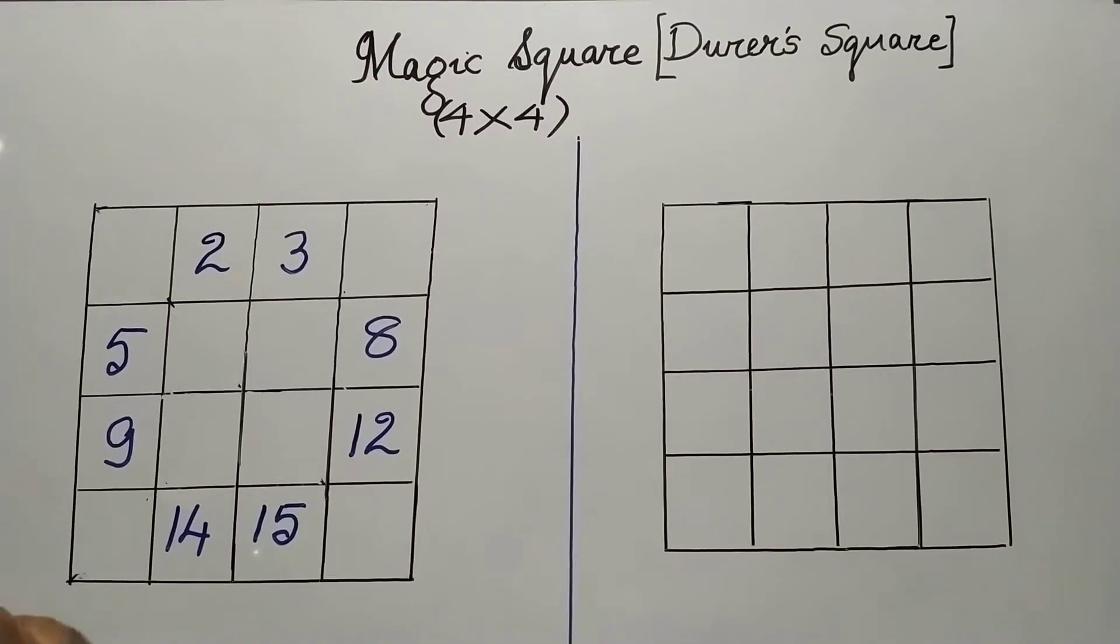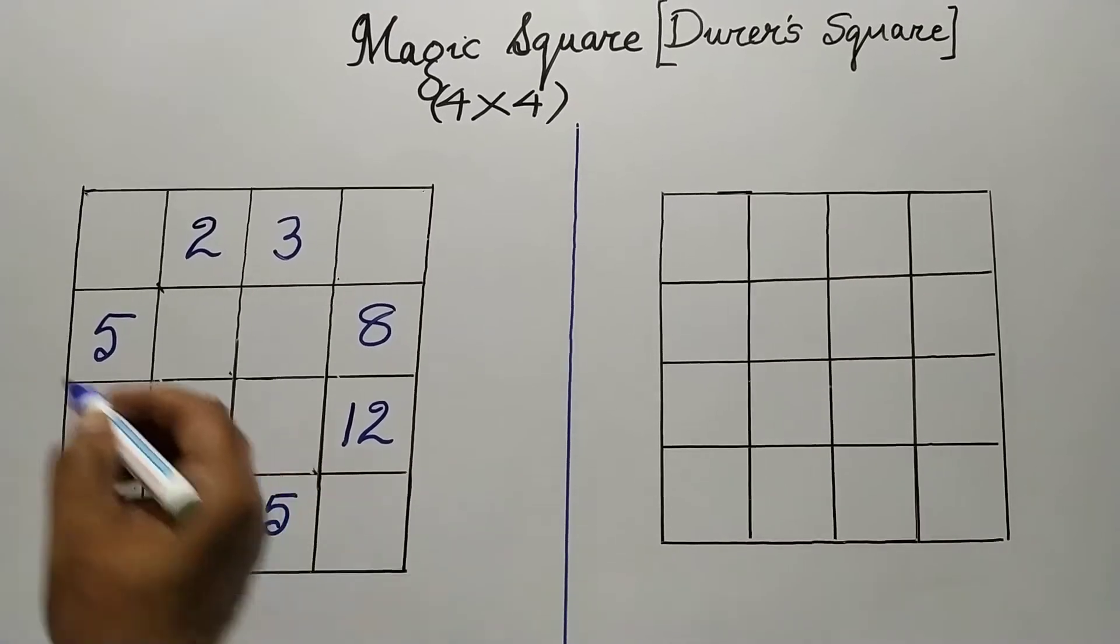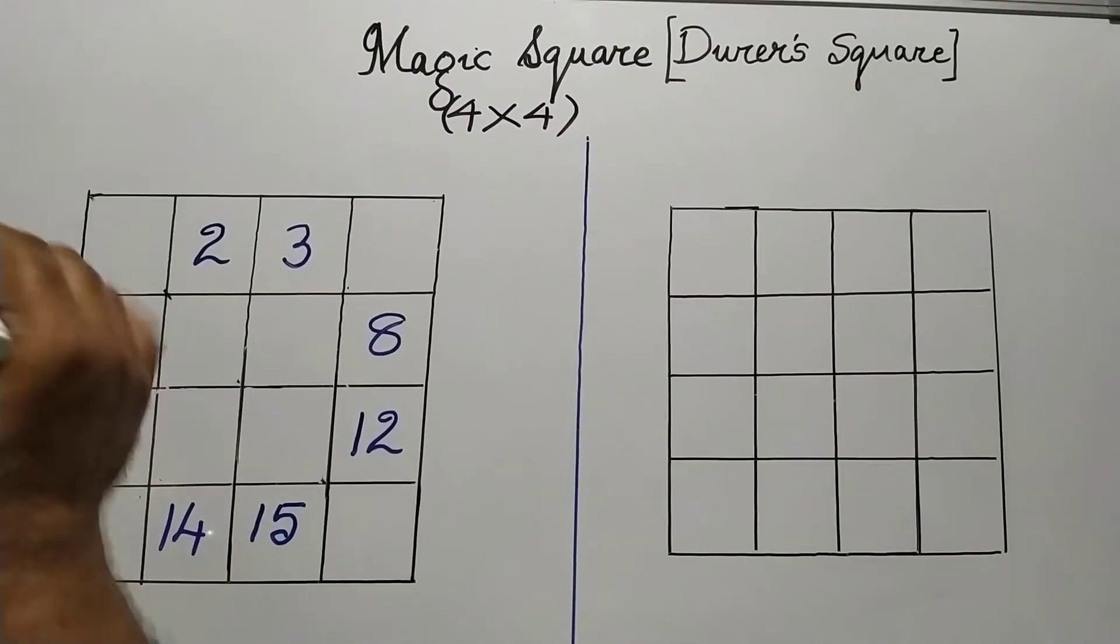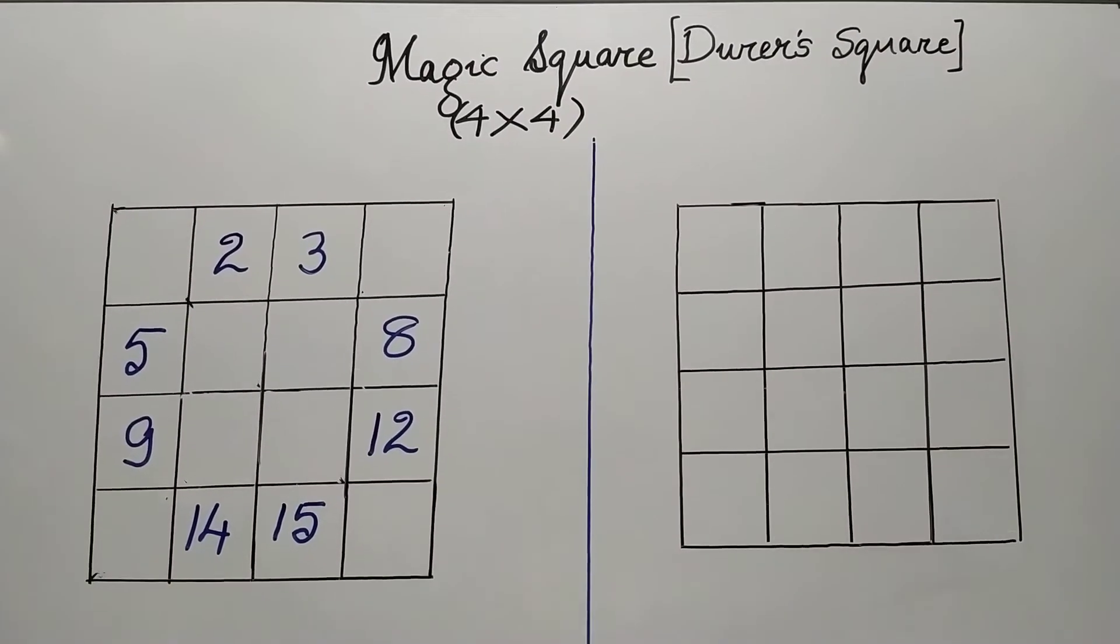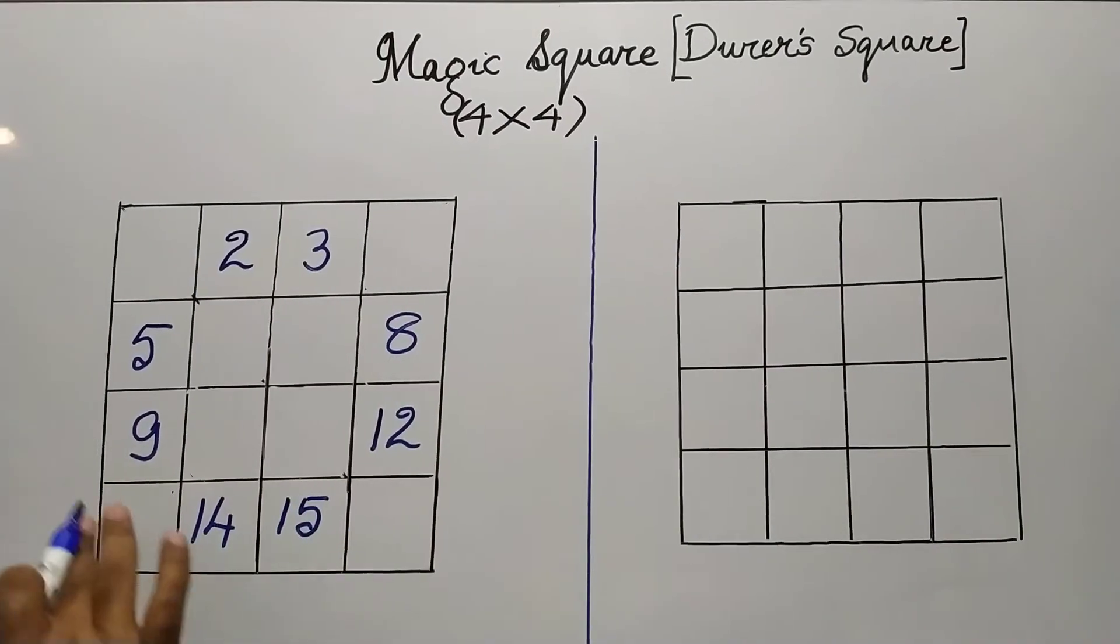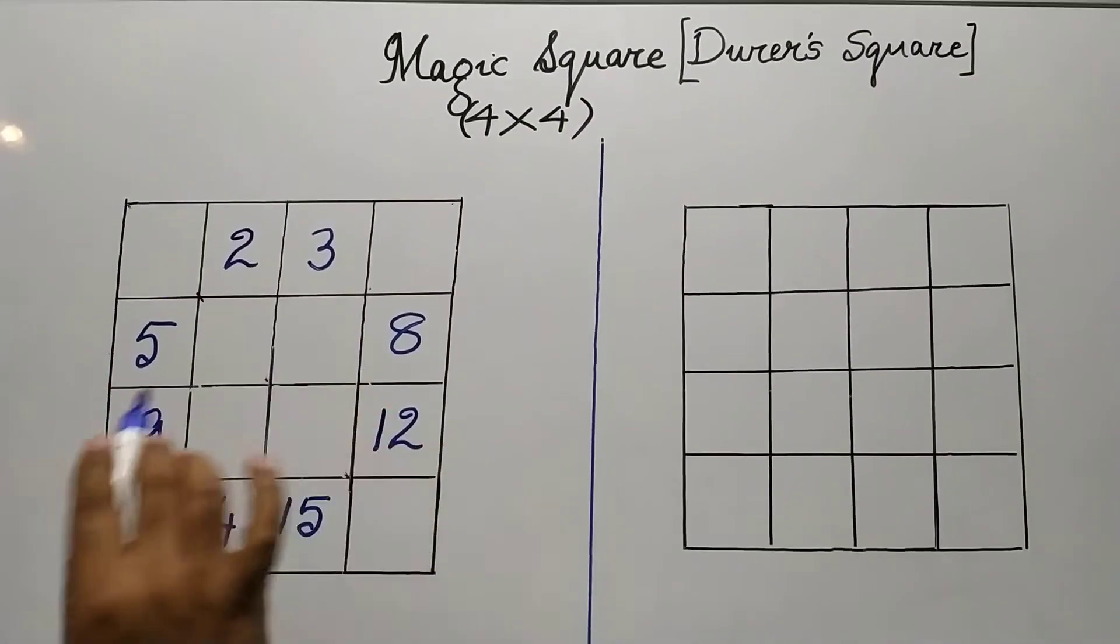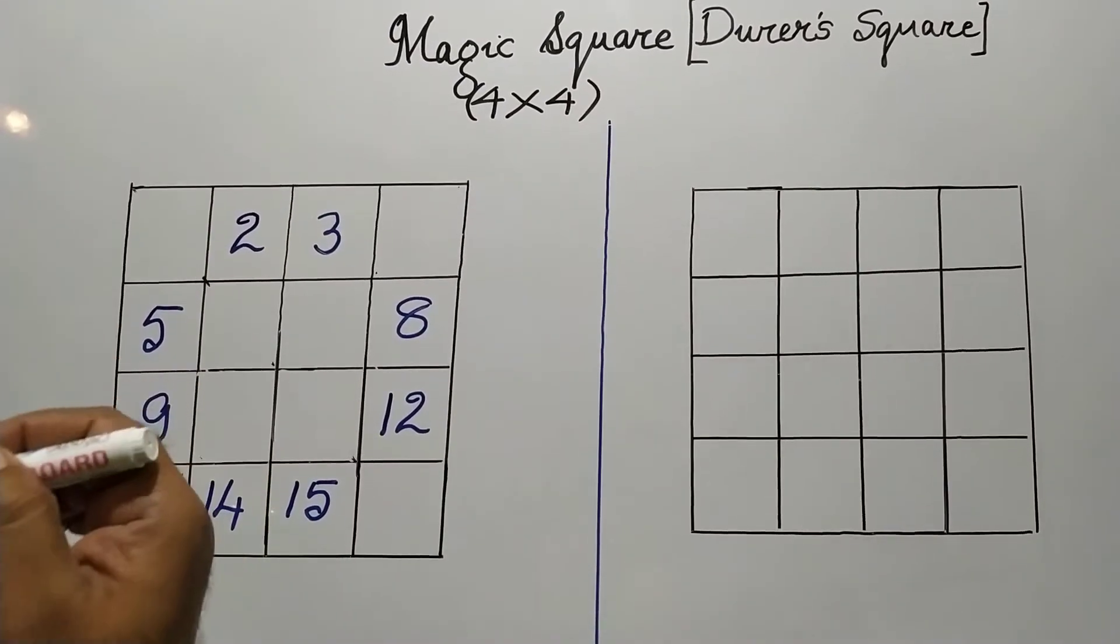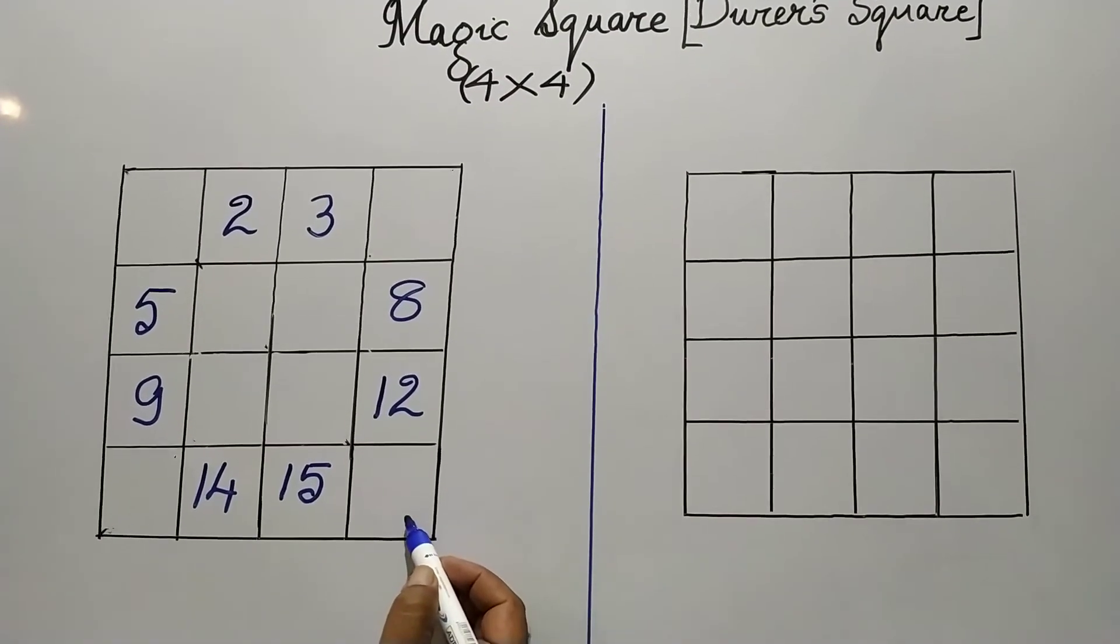Now, the last count was 16. I will start coming in the descending order from 16, and I will fill in those grids which are right now empty and complete the magic square. Wherever already the entries are there, those grids I will just count, but nothing will be written. So the last entry was 16. I will start with 16 from the top again.